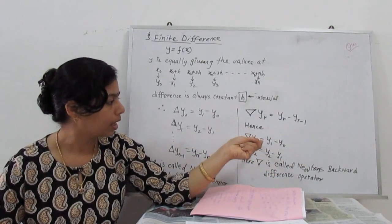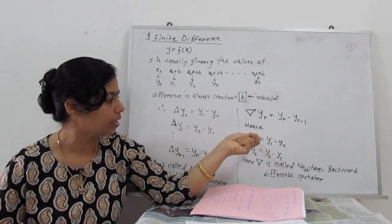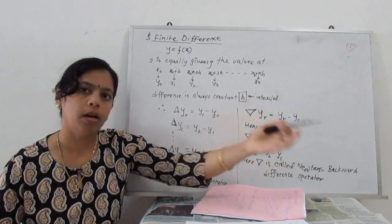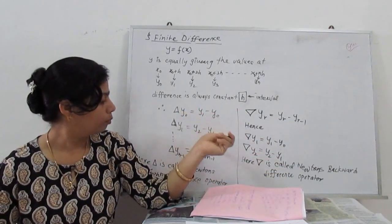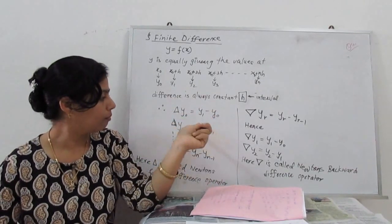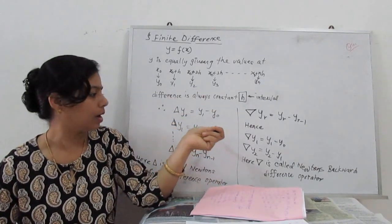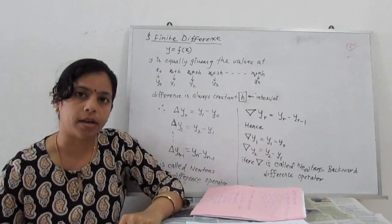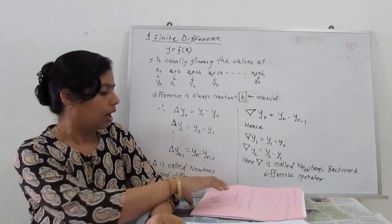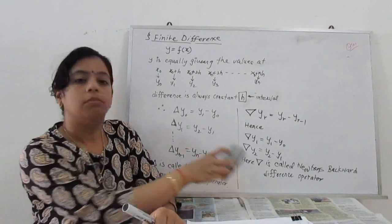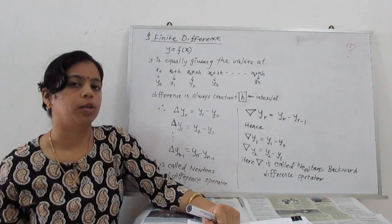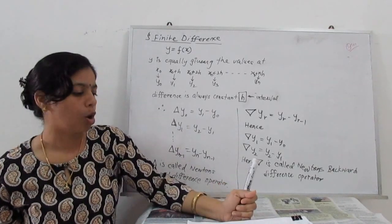The key difference is which value comes first. For the forward operator, the next value comes first — y2 comes first, then minus y1. For the backward operator, the current value comes first, then minus the previous value. These are the Newton forward and Newton backward difference operators. I will now solve some examples for these operators so you can easily understand how to apply them.